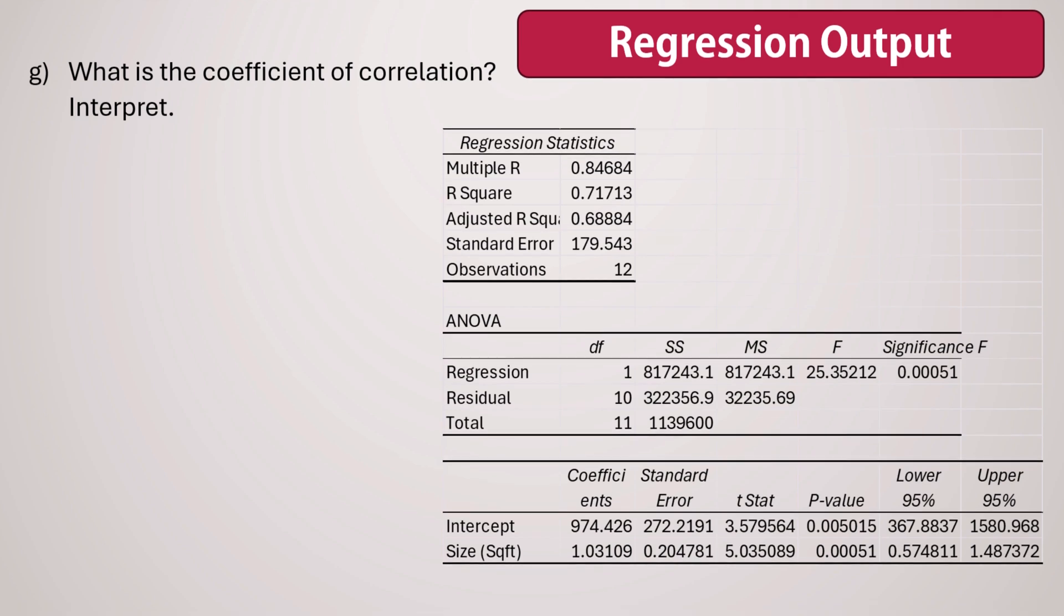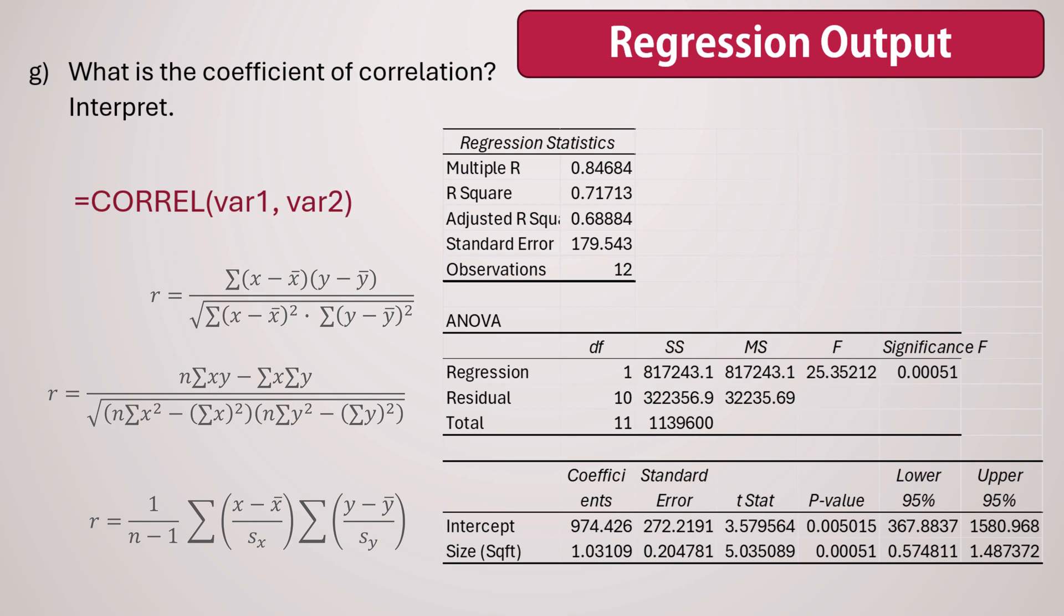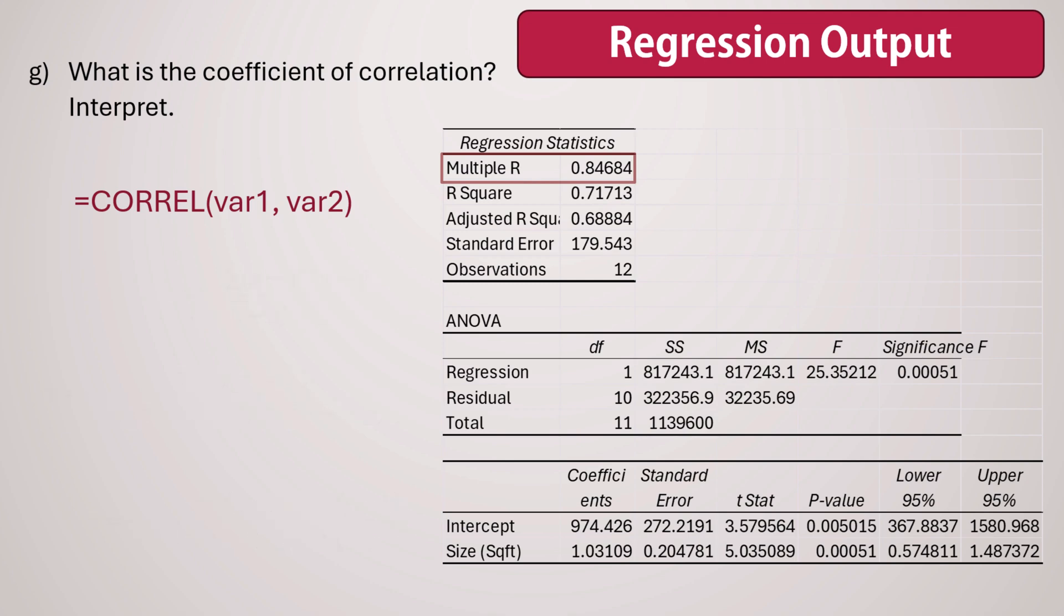Next, we determine and interpret the correlation coefficient R, also called Pearson's R. In Excel, we can use the CORREL function to calculate the correlation coefficient. However, we also find this value displayed as Multiple R in the regression output. Note that this Multiple R is always positive in the output, even when there is a negative correlation present.